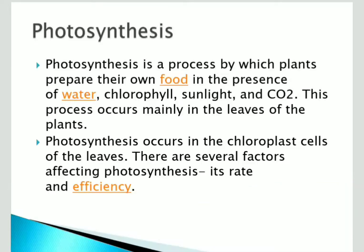Plants synthesize food material in the presence of water, chlorophyll, sunlight, and carbon dioxide. This process occurs in the leaves, specifically in the chloroplast cells, wherever the green regions are. There are several factors which affect the rate and efficiency of photosynthesis.